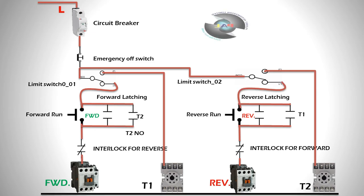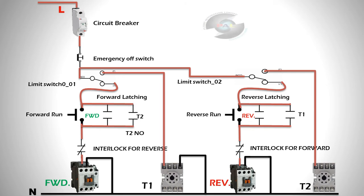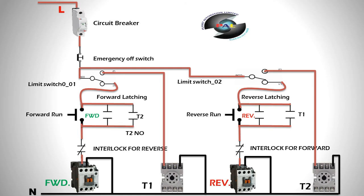And the motor will run in reverse. So friends, these are the neutral connections — red is always your phase connection. Now we are connected neutral connections, the neutral wire. Friends, this is the step-by-step connection here. I hope you guys understand what is the main connection system of reverse forward by limit switch. I will describe it in a practical view in this video so you get a clear concept.